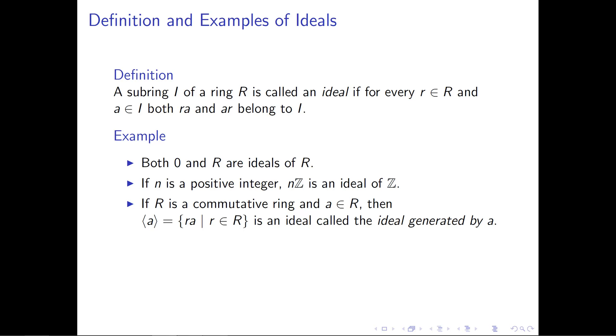Another important example is the ideal generated by an element. This should remind you of the subgroup generated by an element from group theory. If R is a commutative ring and a belongs to R, we can build the ideal generated by a, denoted with angular brackets ⟨a⟩, which is the set of multiples ra where r is in R. This is an ideal because we're assuming R is commutative, so we don't need to separately consider the other multiplication order.